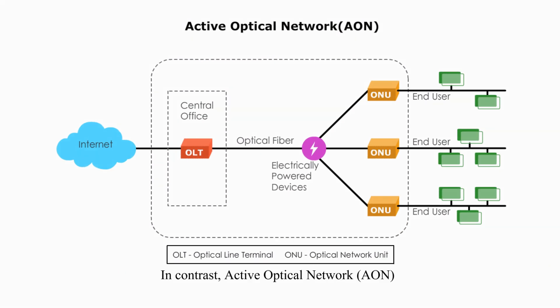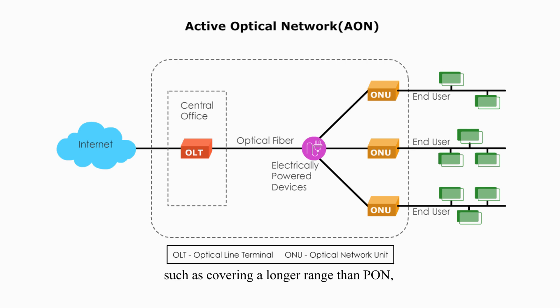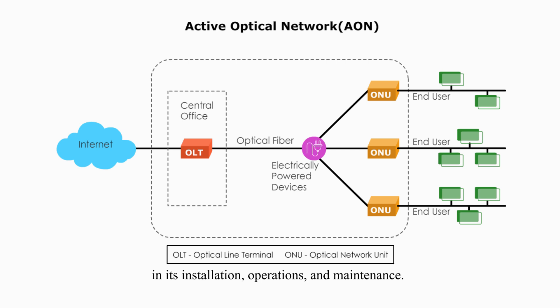In contrast, Active Optical Network (AON) uses active, electrically powered devices such as switches to direct the signal to end users. AON has some advantages, such as covering a longer range than PON and serving fewer end users per unit. However, AON is less popular than PON because it is less cost-effective and more complex in its installation, operations, and maintenance.